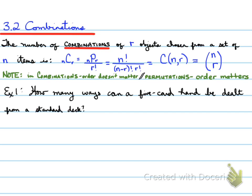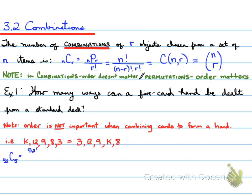How many ways can a 5-card hand be dealt from a standard deck of cards? Order is not important when combining cards to form a hand. King, Queen, 9, 8, 3 is the same as 3, Queen, 9, K, 8. There are 52 cards and we need to choose 5 of them. So 52 choose 5, which is 52 factorial over 52 minus 5 factorial times 5 factorial. You're going to have 2,598,960 ways to have a 5-card hand.